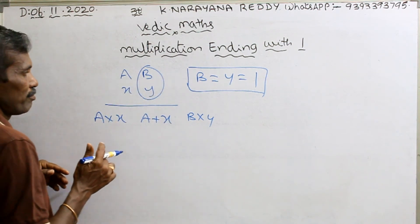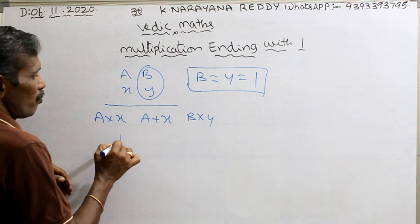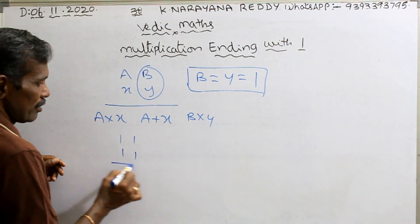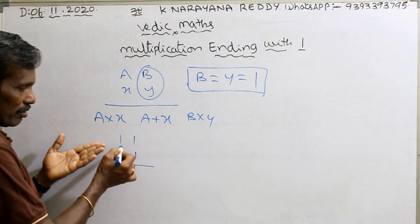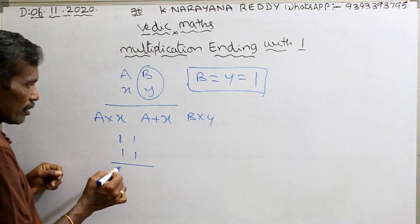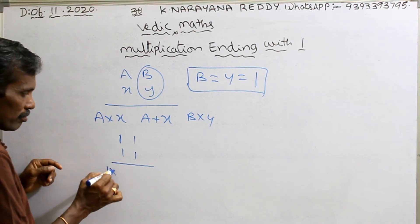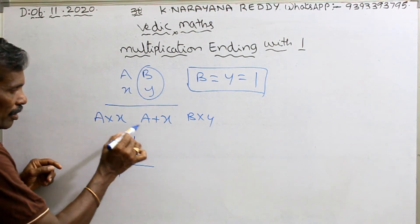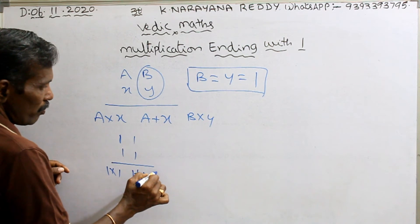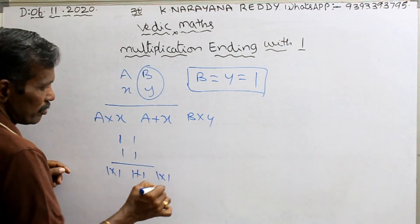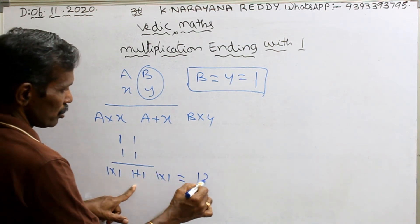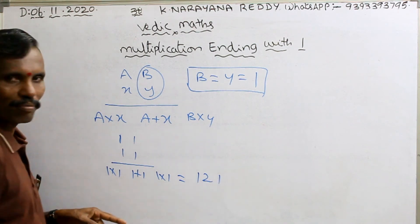Take an example: 11 into 11. Ending with 1 gives 1, 2, 1. Both methods give the same answer — 121.